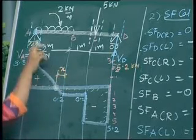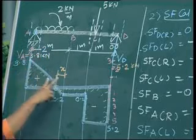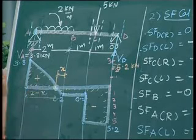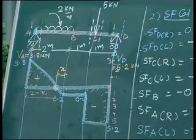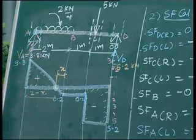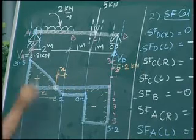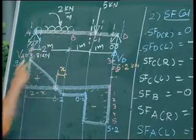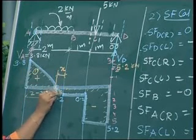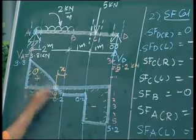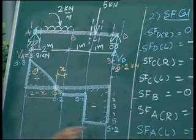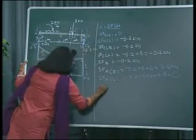I can assume this distance as x. This whole UDL is of 2 meters. If this is x, what will be this other distance? This will be 2 minus x. Now what is a uniformly distributed load? It is a load which is distributed uniformly per meter length — per meter length it will have constant loading. So I can take this as triangle 1 and this as triangle 2, and I can equate these two triangles because the loading is uniformly distributed.